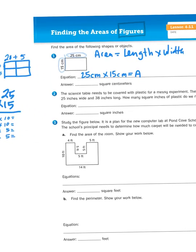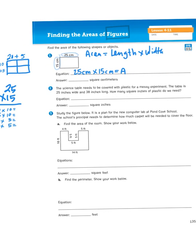Okay, study the figure below. It is a plan for a new computer lab at Pond Cove School. The school's principal needs to determine how much carpet will be needed to cover the floor. This is a perfect area problem because as a homeowner, I often have to look at my flooring choices and decide how do I want to redo my floor. Do I want to use ceramic tile? Do I want to use laminate? Do I want to use a vinyl plank? Hardwood? What would I want to do here? And then I have to decide how much space I have to cover. Now, as you can see, this is not a rectangle.